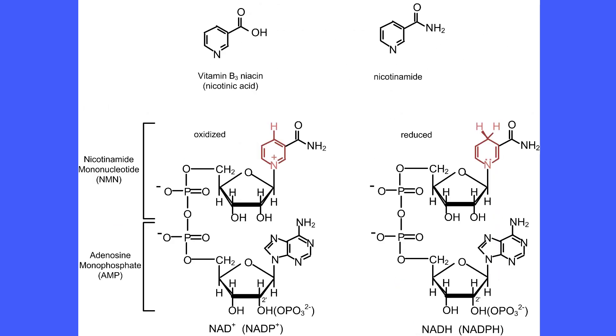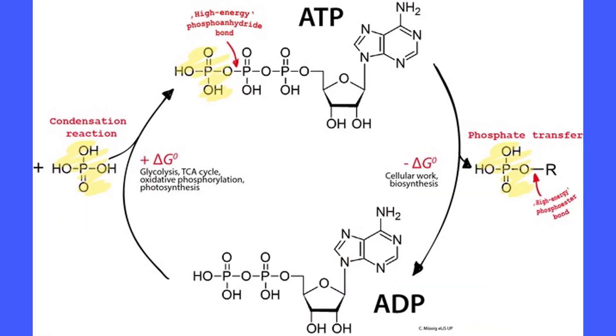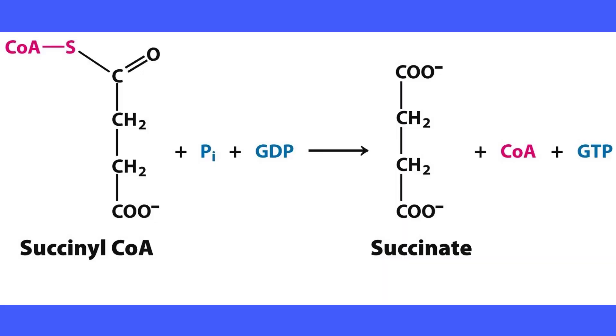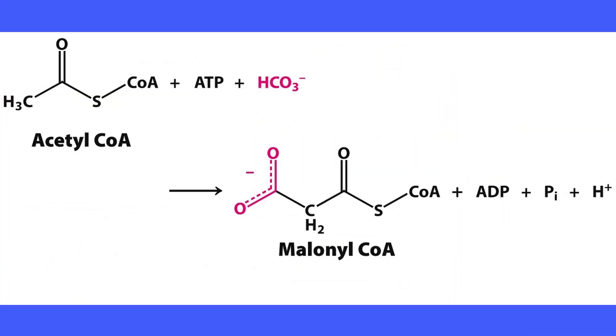ATP, NAD, and coenzyme A form the foundation of the great controlling nucleotides. These coenzymes are modified when they participate in reactions. ATP donates a phosphate to become ADP. Coenzyme A transfers an acyl group, leaving behind a thiol. The acyl group could be acetyl, succinyl, hydroxymethylglutarate, or malonyl.